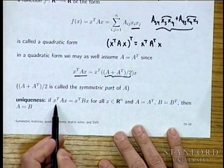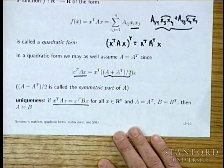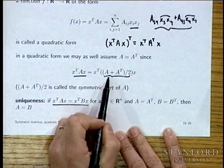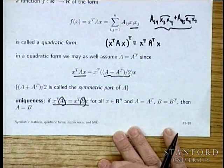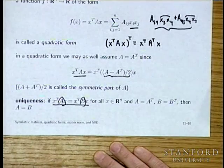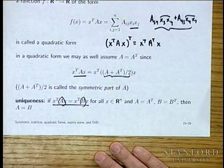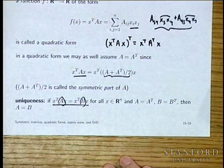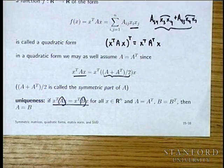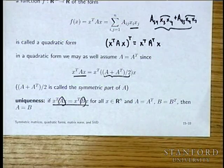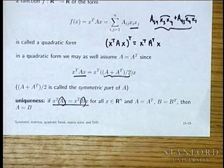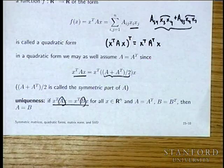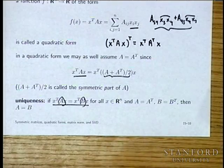It turns out this representation is unique: if two quadratic forms are equal for all x and the matrices defining them are symmetric, then A equals B. It does not mean that every time you see a quadratic form it will be symmetric — you will encounter expressions X transpose AX where A is not symmetric, and some formulas assume A is symmetric and will be absolutely false when it's not.